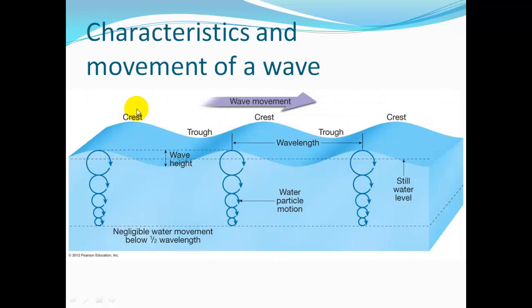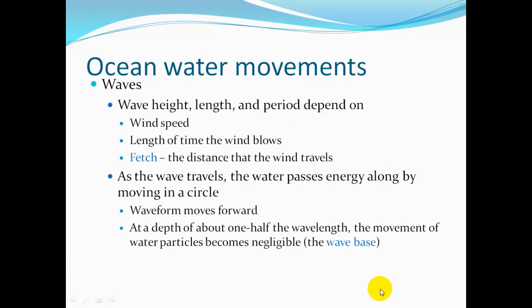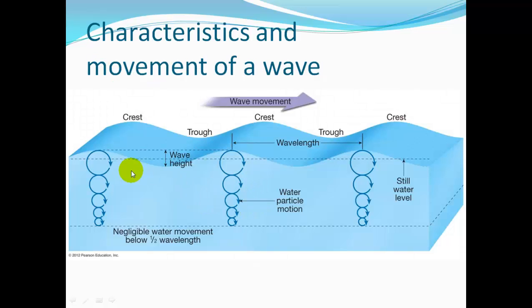At the top of our waves we have our crests; at the bottom we have troughs. The distance and height between the trough and the crest is the amplitude or wave height. The distance from crest to crest — or from trough to trough — is our wavelength. Energy is actually moving in the direction of wave travel, while the particles in the water just bob in a circular motion and remain essentially in place.